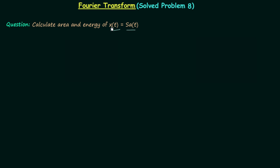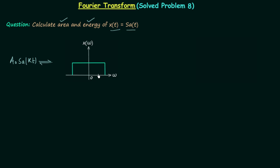Signal x(t) is equal to sinc(t), and we are required to calculate the total area and total energy of signal x(t). We know the Fourier transform of the generalized sinc function: a0 * sinc(kt). Its Fourier transform is a rectangular function with amplitude equal to a0*π/k, and the range of omega for which the Fourier transform equals a0*π/k is from minus k to plus k.